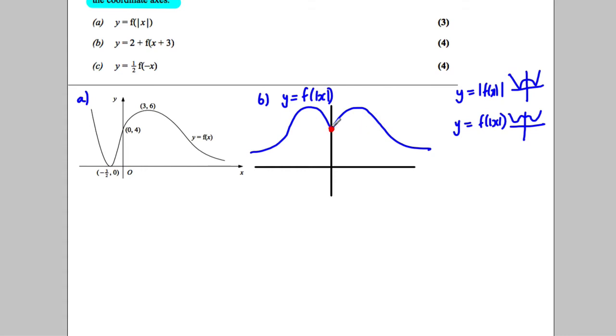Let's make sure we label the points. So this is clearly 0, 4. The maximum stays here is still 3, 6. But clearly now there's a new maximum over here at negative 3, 6. And there's no minimum. These points are now lost. So we've done part A.